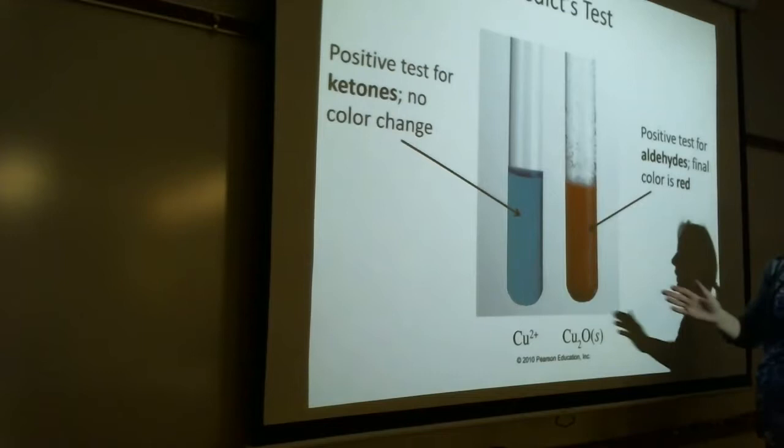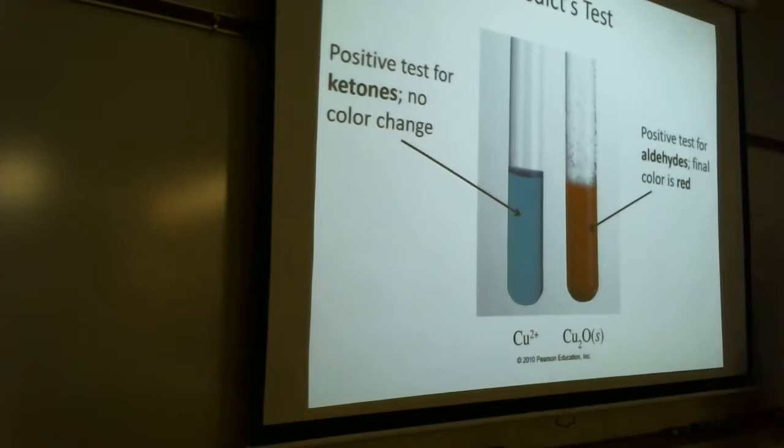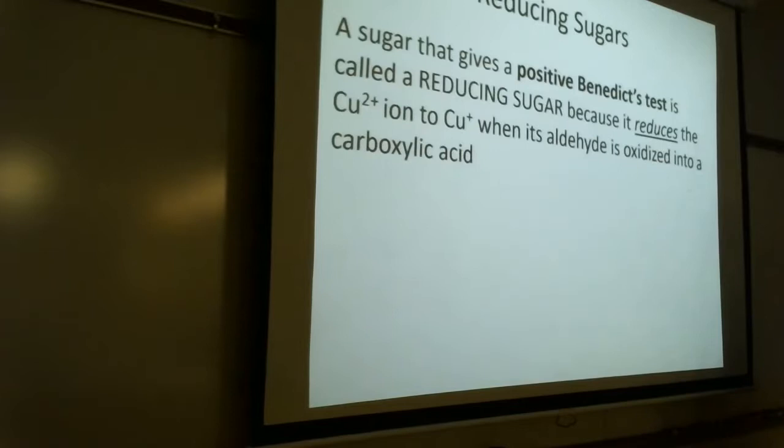If you've got ketones, no reaction. If you've got aldehydes, bright red, well it's actually kind of a dark red, it looks like a rusty kind of color, precipitate forms pretty much immediately upon heating. You need to heat it. This doesn't occur at room temperature. But once you start heating it, you start seeing this reddish stuff forming right away, and then the whole solution will turn red.